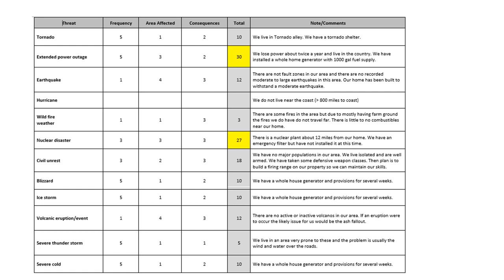Sometimes all you can do is work on one threat, and sometimes a fix is free — just make a procedure. For example, if you live near the coast, a procedure that says 'if a hurricane is expected, we leave a day before everyone else' costs nothing to make. You just implement it, book a hotel a week ahead when you see it coming, and get outside the hurricane's path. Your house might be gone, but your family is safe.